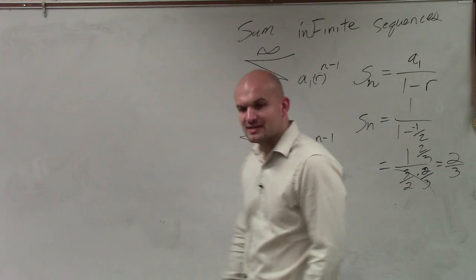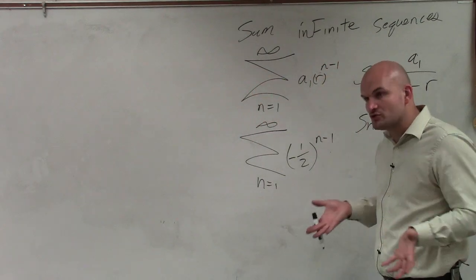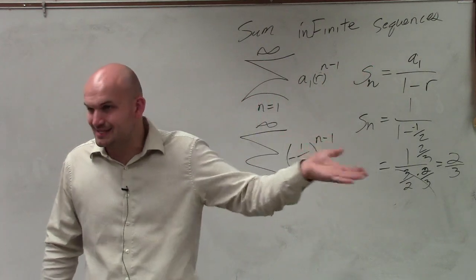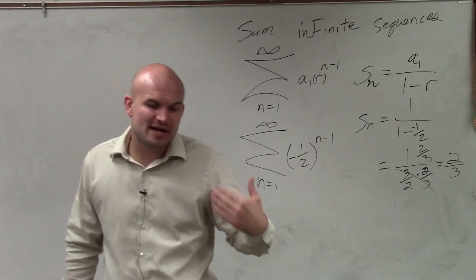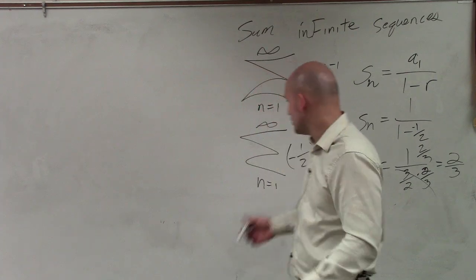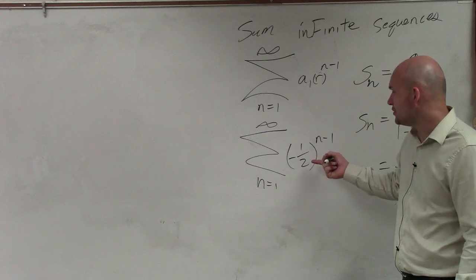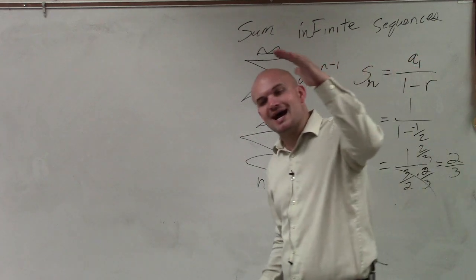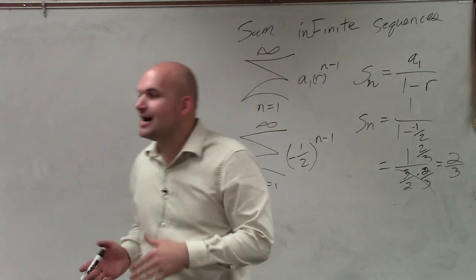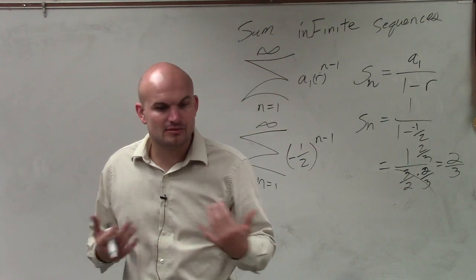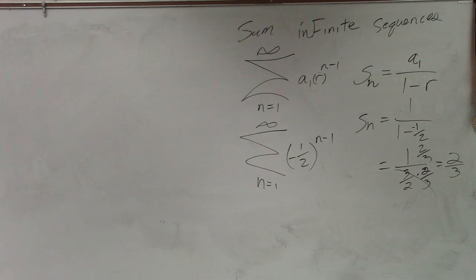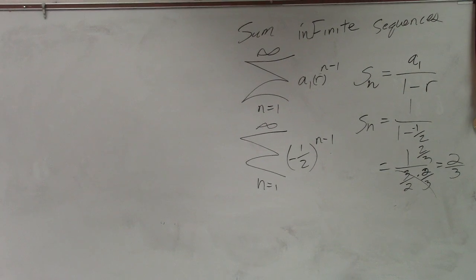What you can see is that this sum is approaching 2 thirds, which is the repeating decimal 0.6666... If you add up each and every term, the first term is 1, the next term is negative 0.5, and it starts out varying but converges onto 0.6666..., which is your sum. So you can find the sum of an infinite series, and it's really interesting to see how it converges.